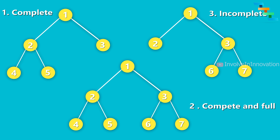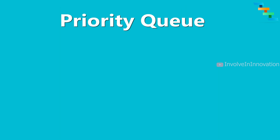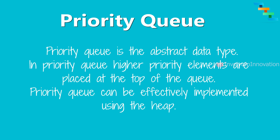We will see what is the important application of heap. Priority queue is an abstract data type. In a priority queue, higher priority elements are placed at the top of the queue. Priority queue can be effectively implemented using a heap. To know more about priority queue, refer to my video tutorial on priority queue — the link is given in the description.